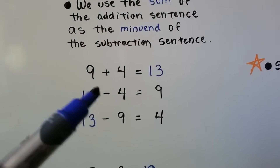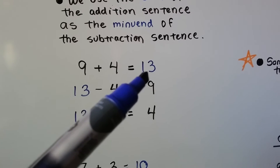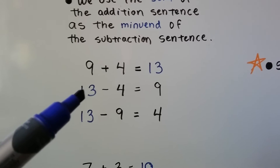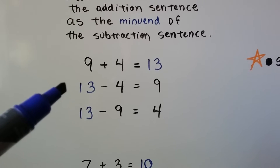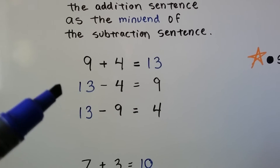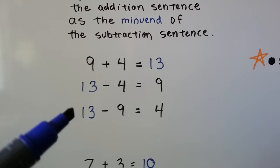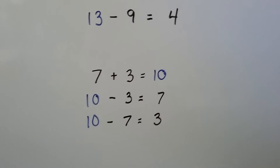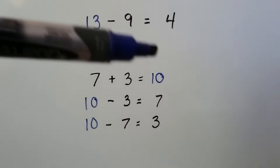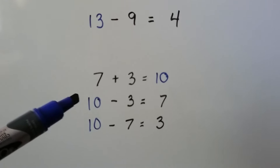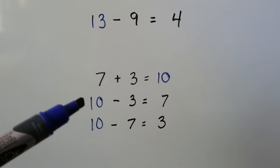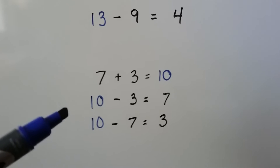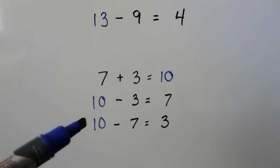Nine plus four equals thirteen. Thirteen is the sum. We're going to use it as the minuend in the subtraction sentence. Thirteen minus nine equals four. Seven plus three equals ten. Ten is the sum. We're going to use it as the minuend in the subtraction sentence. Ten minus three equals seven. And ten minus seven equals three.